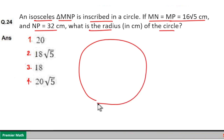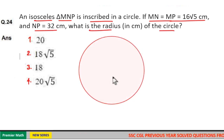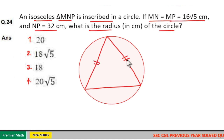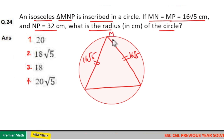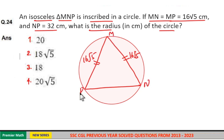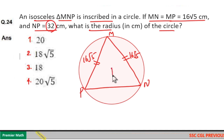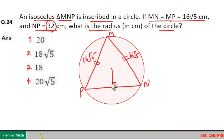Here, this is the circle and triangle MNP is an isosceles triangle which is inscribed in this circle. Isosceles means two sides are equal. The two equal sides are 16 root 5 each. Now, from the center of the circle to the chord, if you draw a perpendicular, then this perpendicular divides the chord equally.